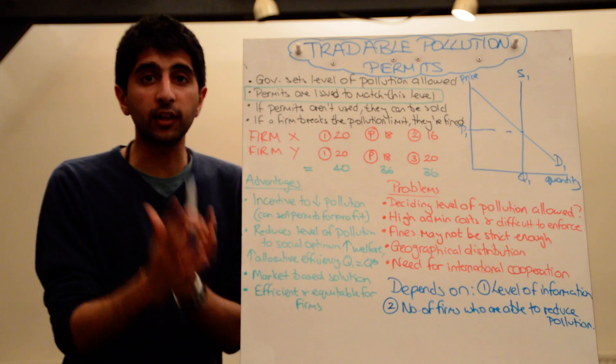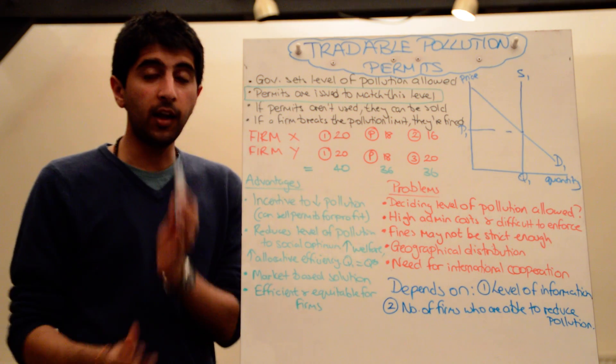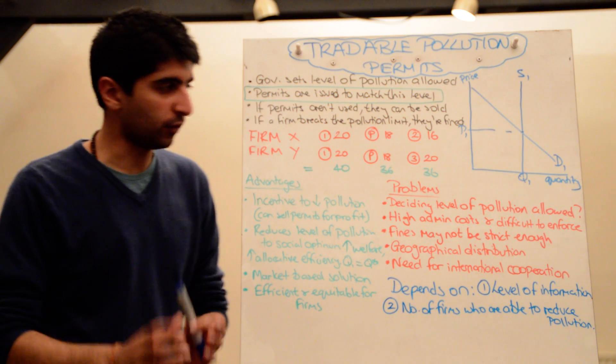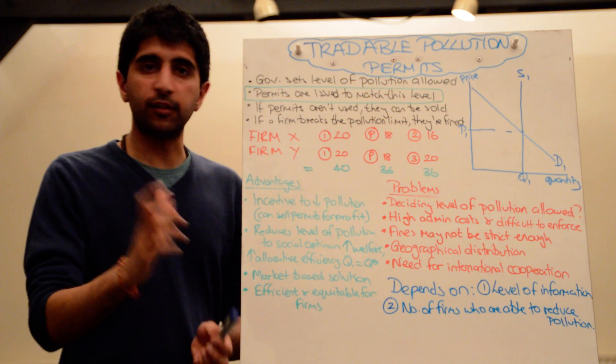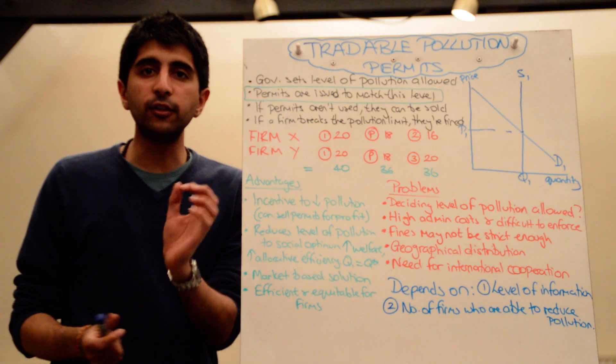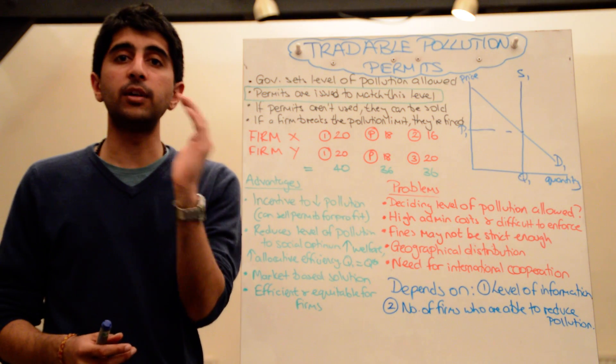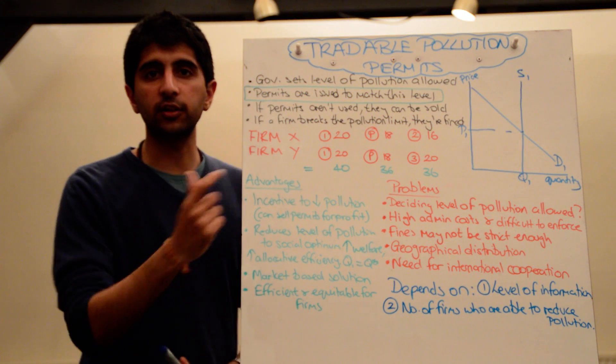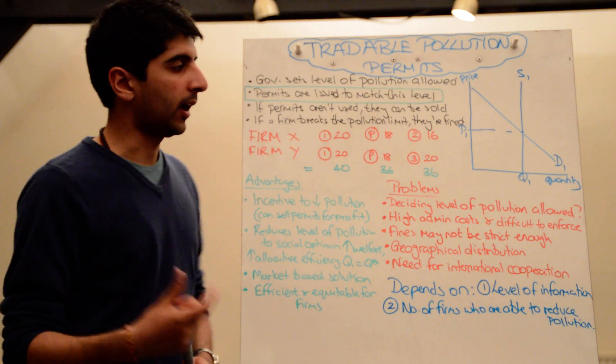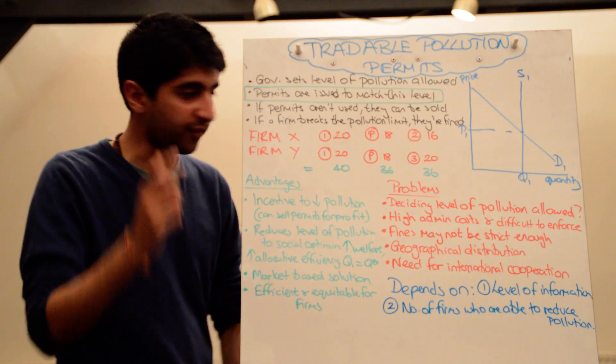But regardless, when they're introduced, the costs of production, this is very important, the costs of production for firms increase. So if you've got an essay on pollution permits as the one policy to solve pollution market failure, you would need to draw the fact that costs of production for firms increase, supply shift to the left, and then we see reduction in quantity, thus improving resource allocation. So make sure you're aware of that.